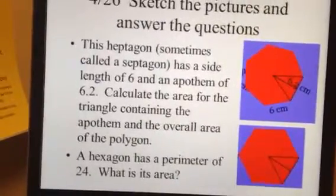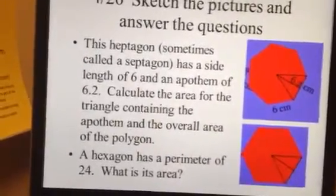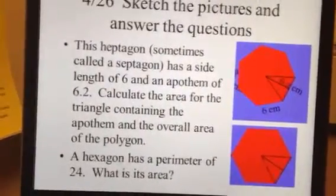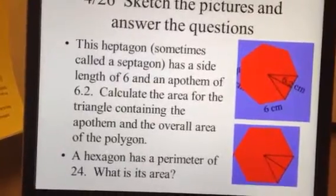Second problem, I'm just giving you a hexagon that has a perimeter of 24, and you're just supposed to figure out its area. So the first one's definitely easier than the second one. The second one's going to rely on a few tricks. So I'm going to, let's switch over to the work here.